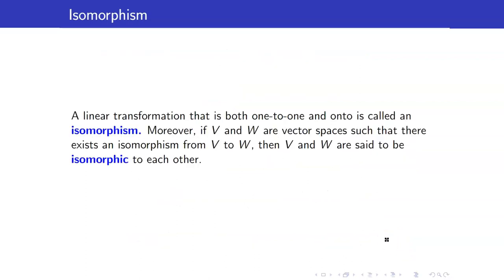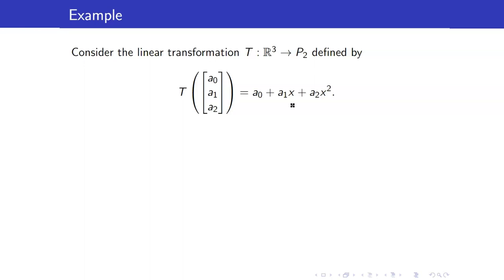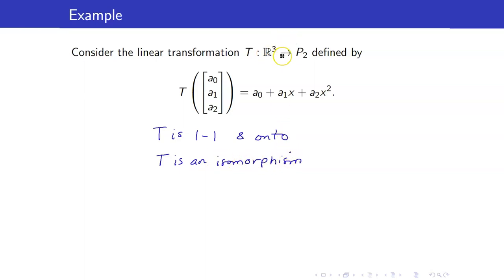Why are we discussing 1-to-1 and onto functions? When a linear transformation is both 1-to-1 and onto, it is called an isomorphism. Moreover, if V and W are vector spaces such that there exists an isomorphism from V to W, then we say the two vector spaces are isomorphic to each other. From our previous example, T is an isomorphism between R3 and P2, and therefore R3 and P2 are isomorphic to each other.